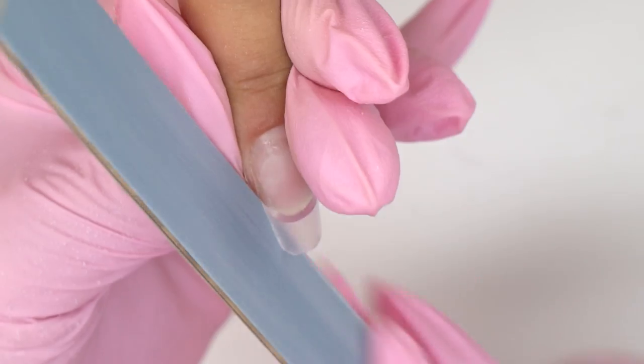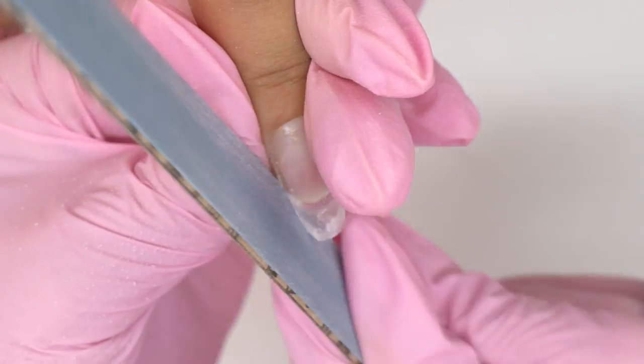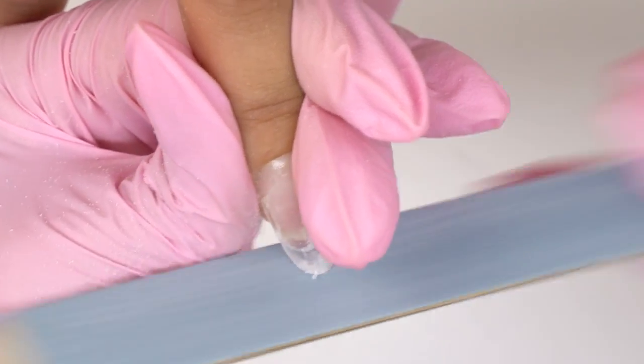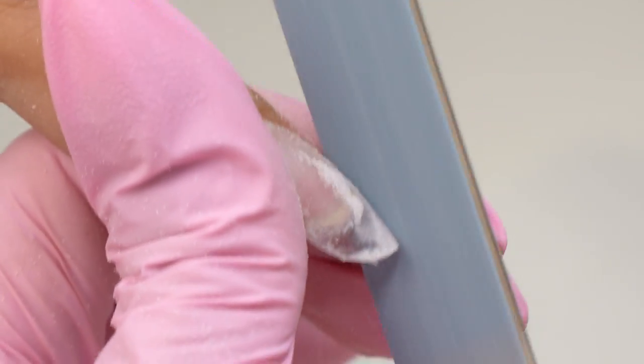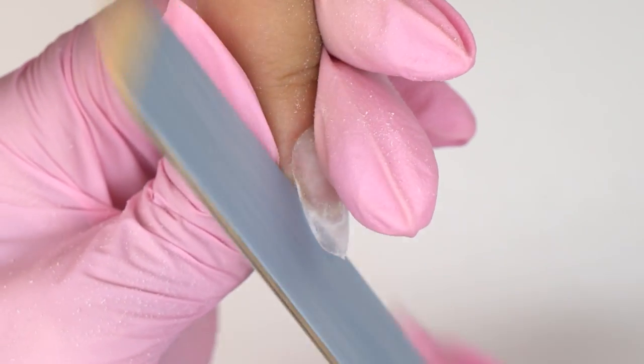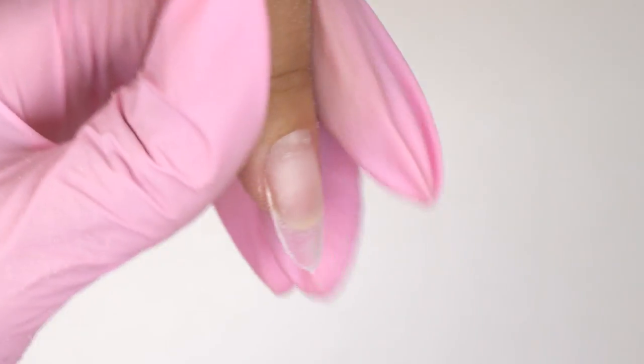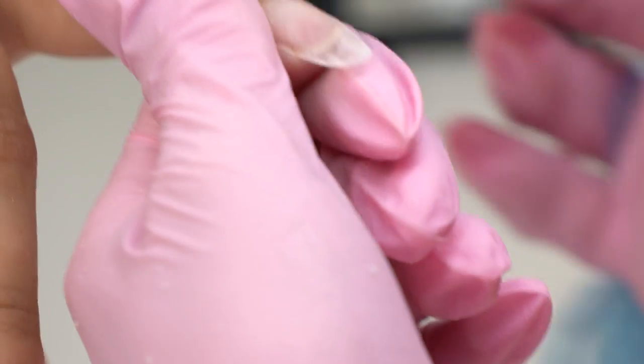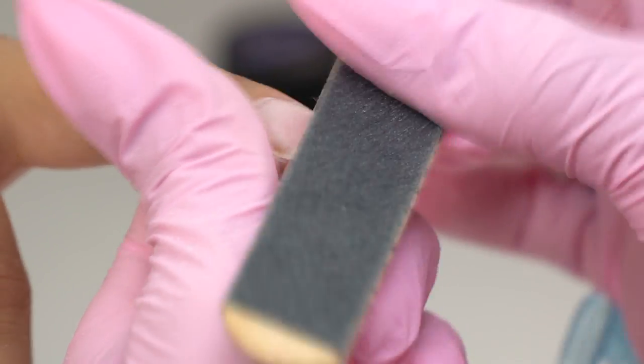Now, I shape them into almonds. These tips are supposed to last well and protect the nail plate. I tried them out on my own nails and they lasted perfectly. They also look really natural.